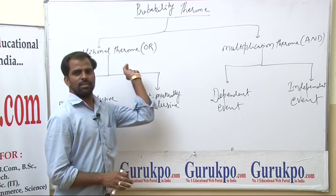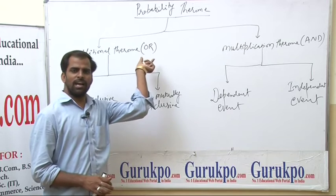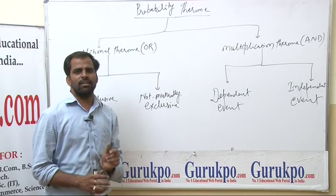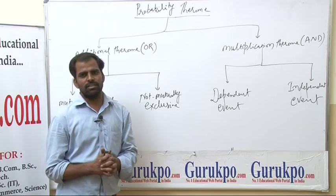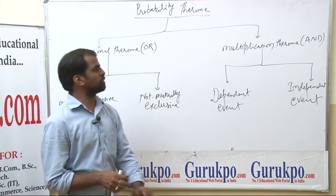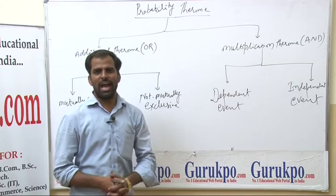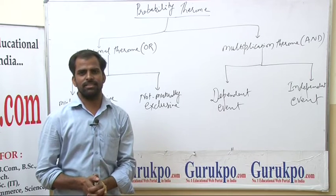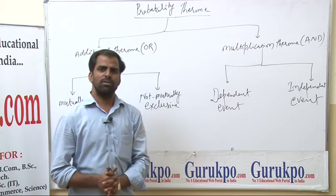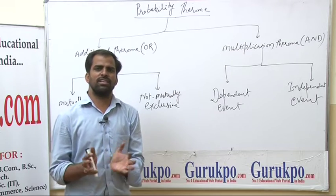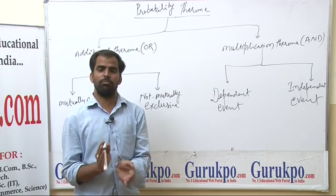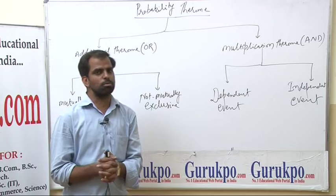Additional theorem is associated with 'OR' — Hindi ka arthaat 'ya'. Jabki multiplication theorem is associated with 'AND' — Hindi ka arthaat 'aur'. Jab aapko dho ya dho se adhi ghatnao mein se kisi ek ghatna ke ghatit hone ke baare mein anuman ho, to aap dho ka atfah (OR) use karte hain.